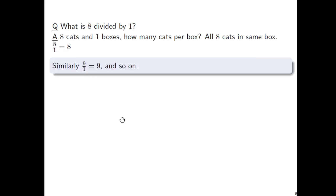And what is 8 divided by 1? Well, 8 cats in 1 box, how many cats per box? That's just all 8 cats are in the same box. There's only 1 box, after all. Well, this is what will tell us that 8 divided by 1 is equal to 8.